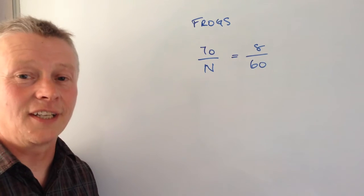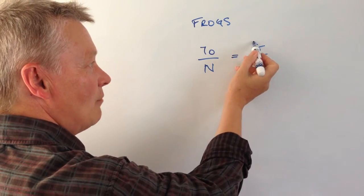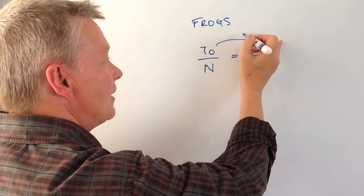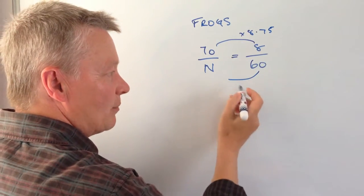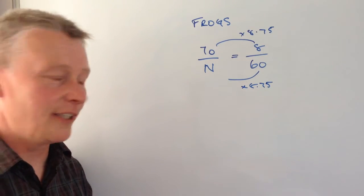Well really all we're doing is dealing with equivalent fractions. So what we're saying is if I multiply this eight, and I actually multiply this eight by 8.75, then if I multiply the bottom by 8.75 that will give me the total value.